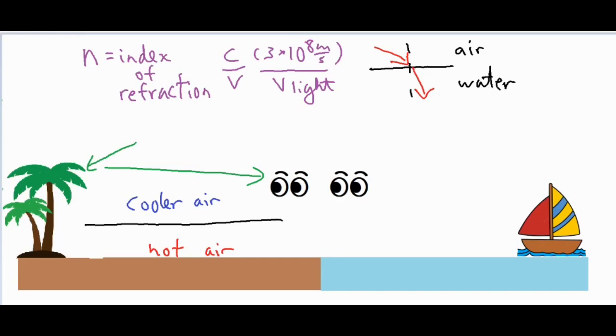What happens is the light from the palm tree is going to move towards the hot air. Let me go ahead and draw a normal in there. As that light is approaching, it is moving from the cooler air, which is more dense, which means the more dense medium is going to have the light ray closer to the normal. It's going to move to something that's less dense, so it's going to move it farther from the normal, and it's going to start to bend it upwards.